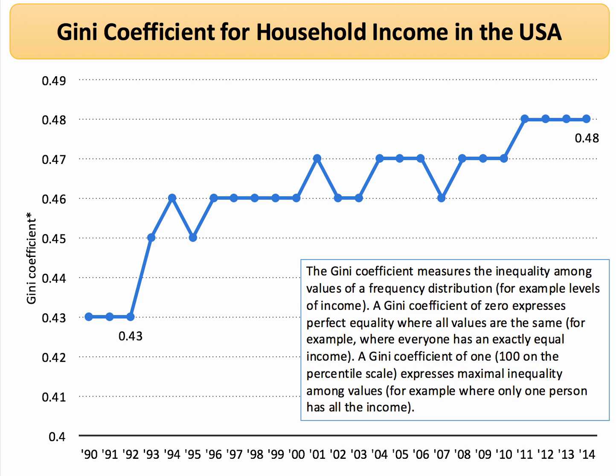Income inequality in the United States has been getting worse. This is the published Gini coefficient for the United States since 1990. It's gone up from 0.43 to 0.48.